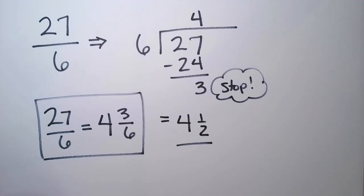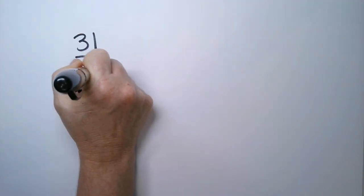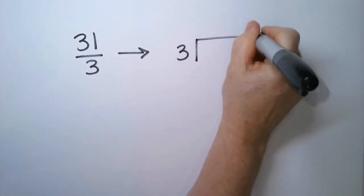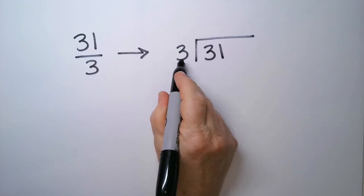Let's try another improper fraction. So let's try 31 over 3. We're going to set up the division problem. The numerator goes inside. The denominator goes outside.